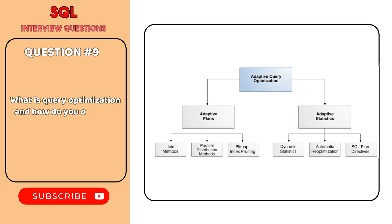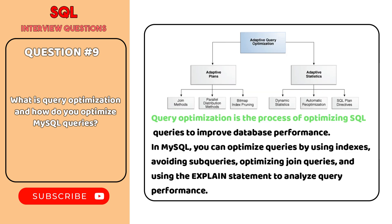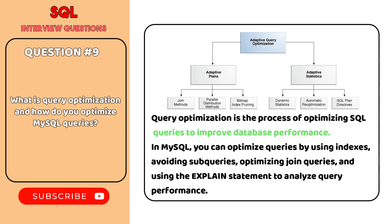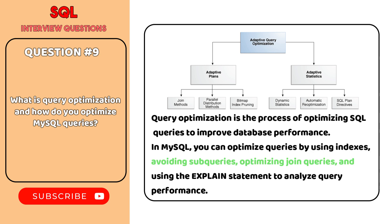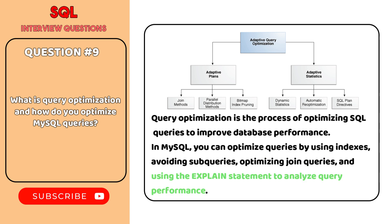What is query optimization and how do you optimize MySQL queries? Query optimization is the process of optimizing SQL queries to improve database performance. In MySQL, you can optimize queries by using indexes, avoiding subqueries, optimizing join queries, and using the EXPLAIN statement to analyze query performance.